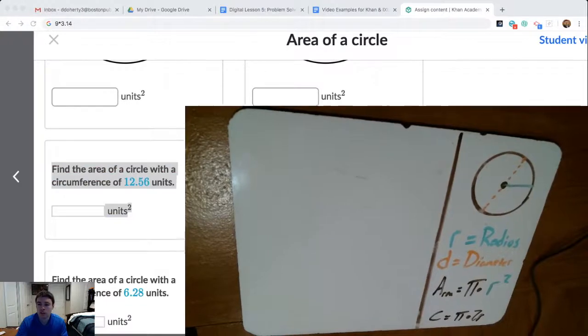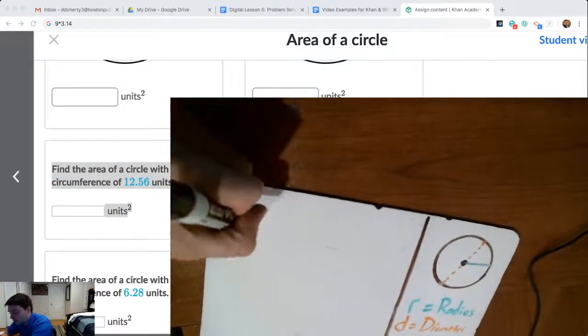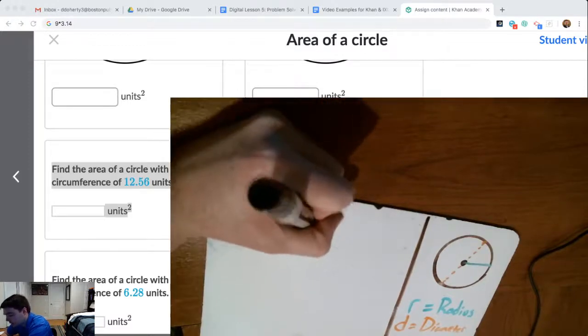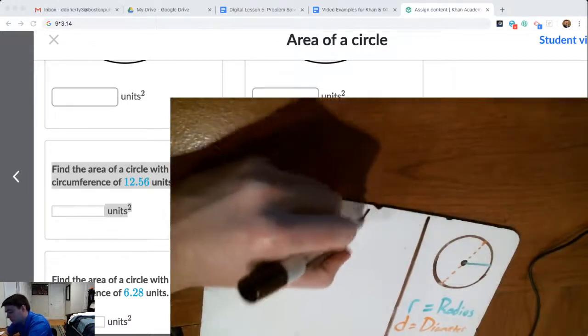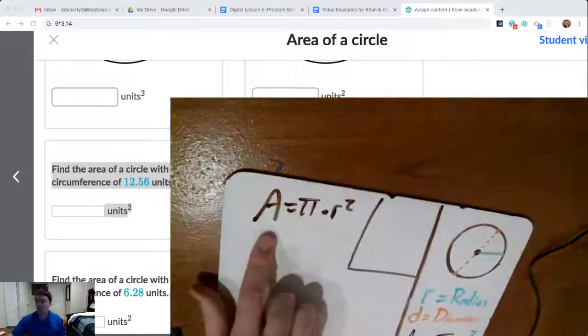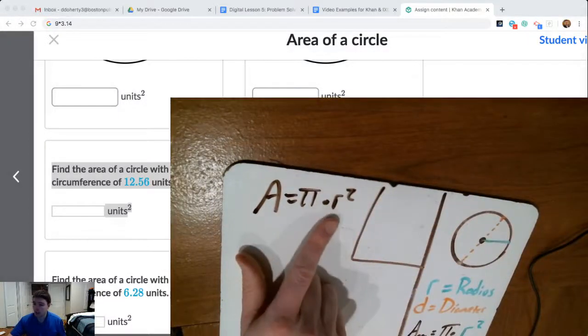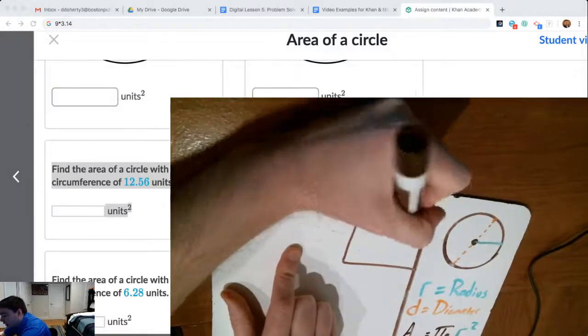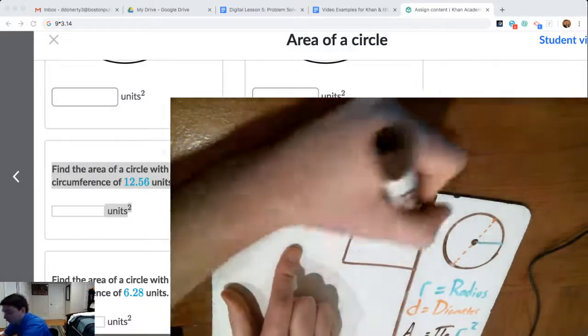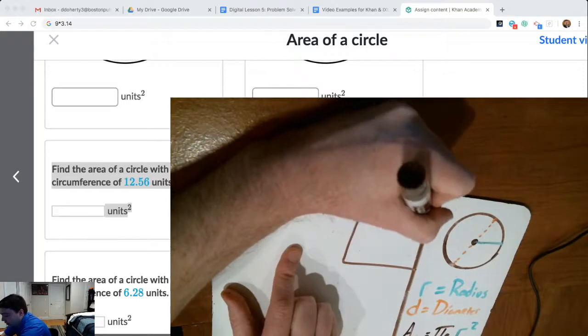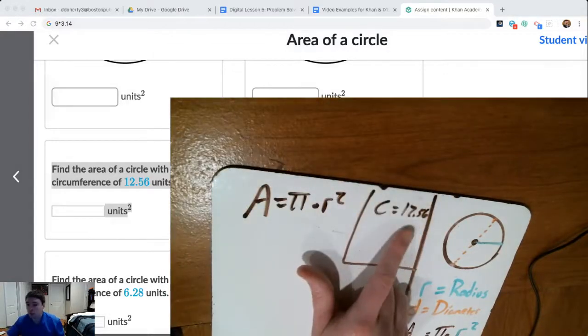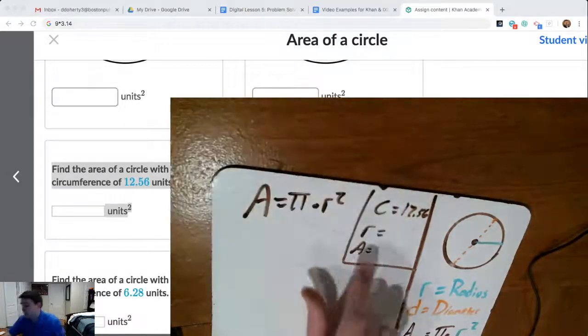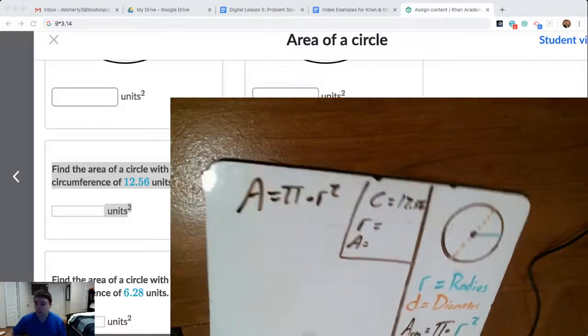So the first thing I'm going to do is write down here my area formula, which is area equals pi times radius squared. To know the area for any circle, radius is how I get there using this formula. Here we don't know the radius, we know the circumference though is 12.56. So I'm going to put that over here. The circumference is 12.56. And if I were to know the radius, that would be my key to get area. So the real question is, what is the radius?